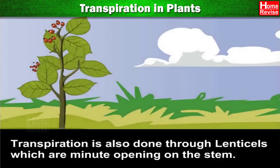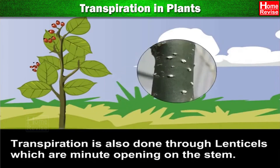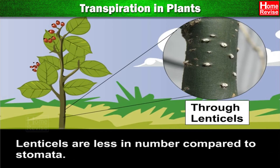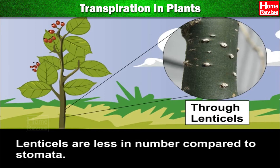Transpiration is also done through lenticels, which are minute openings on the stem. Lenticels are less in number compared to stomata.